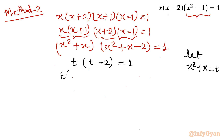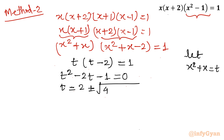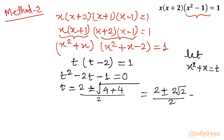A quadratic forms in t: t squared minus 2t minus 1 equal to 0. Applying the quadratic formula: t equals minus b, so 2, plus or minus square root of b squared — that is 4 — minus 4ac, so plus 4, divided by 2. This gives 2 plus or minus the square root of 8, which is 2 root 2, over 2. So t equals 1 plus or minus root 2.